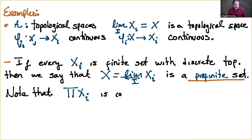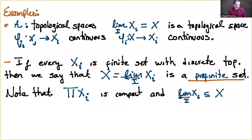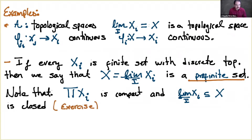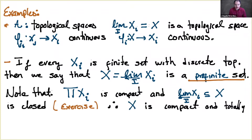Since every finite set with the discrete topology is compact, the product is also compact. The projective limit is in fact a closed subset — the condition defining the projective limit as I constructed it is a closed condition — so the limit is a closed subset of this compact space. Therefore this is also compact, and I leave this to you as an exercise. So X is also compact.